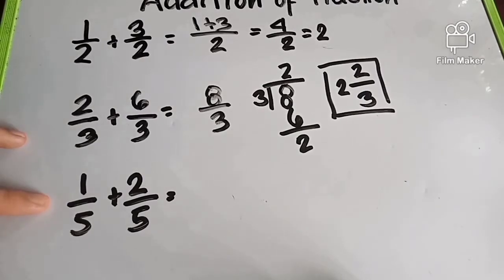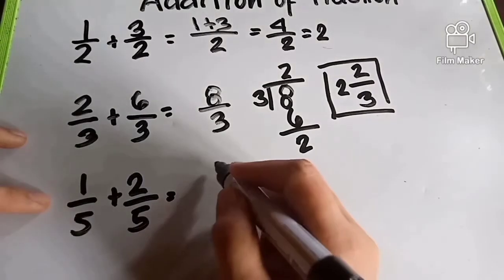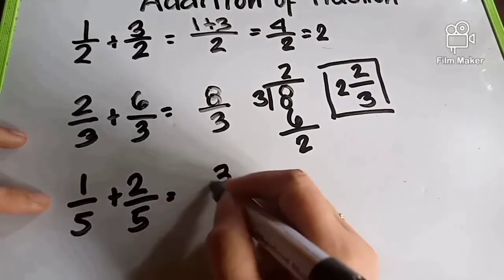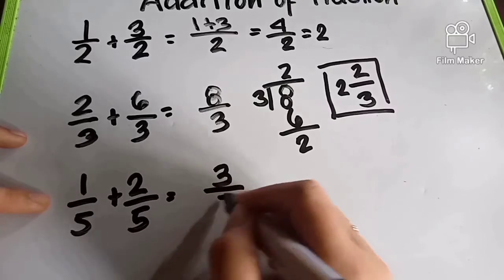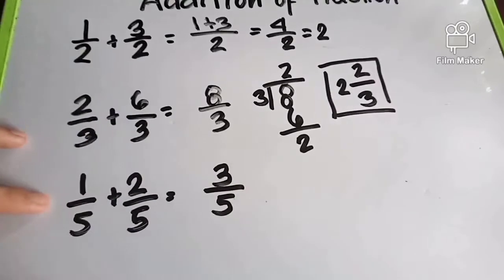1 divided by 5 — same pa rin. So the answer is 3 and 2 over 3.